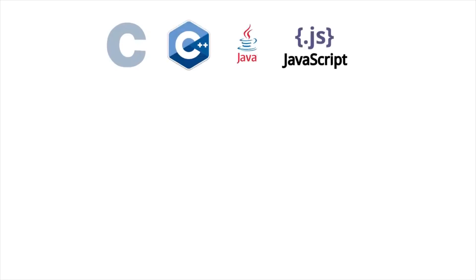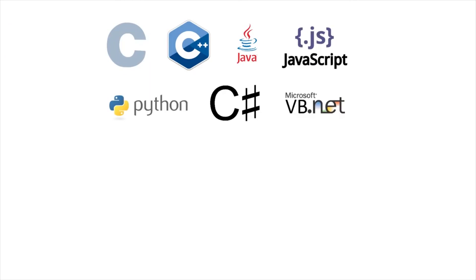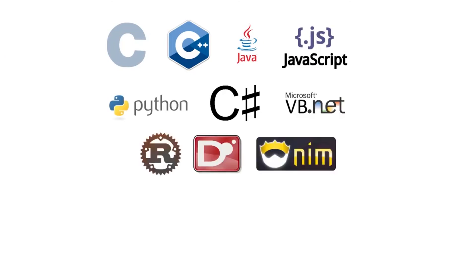The Comfile Pi can be programmed in just about any programming language including C, C++, Java, JavaScript, Python, C Sharp, VB.NET, and even emerging languages such as Rust, D, and Nim, just to name a few.